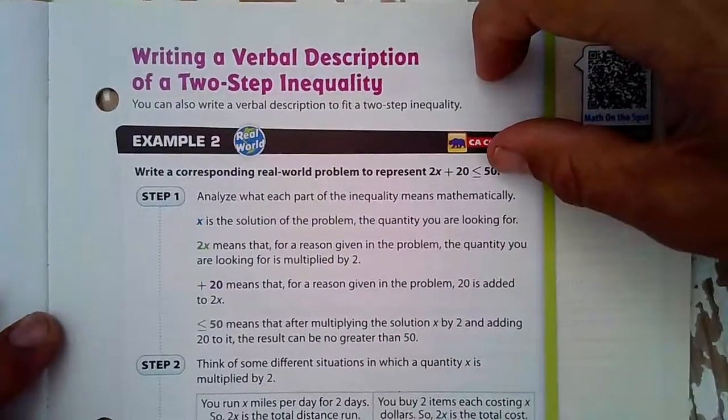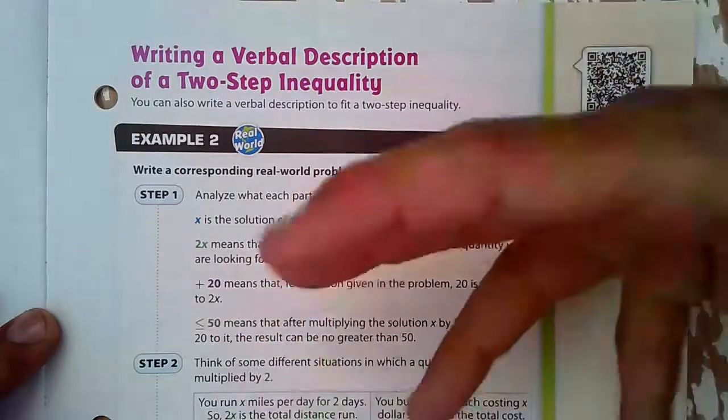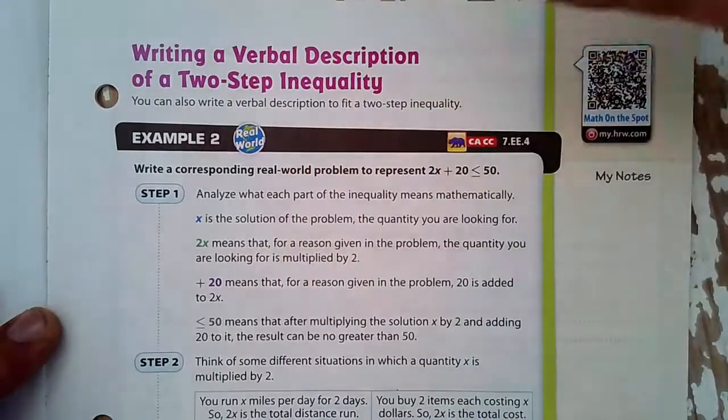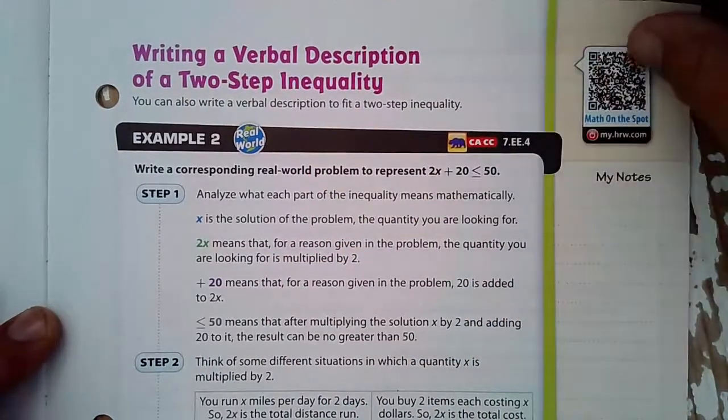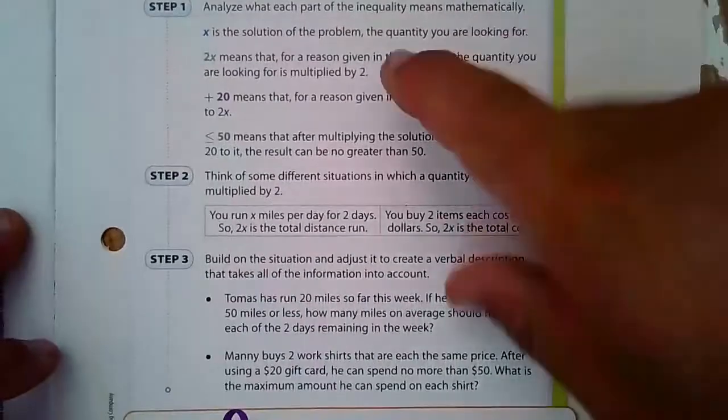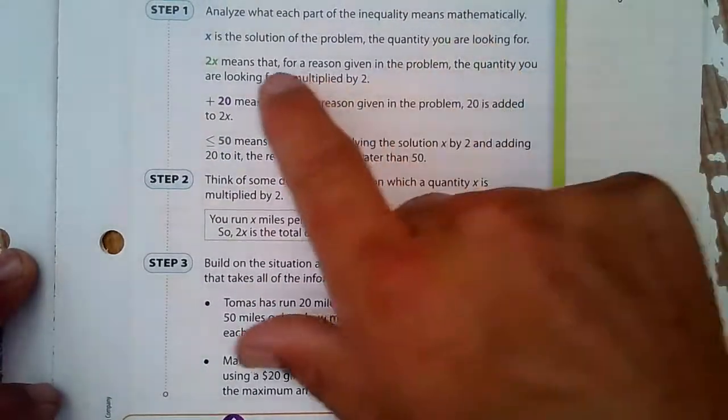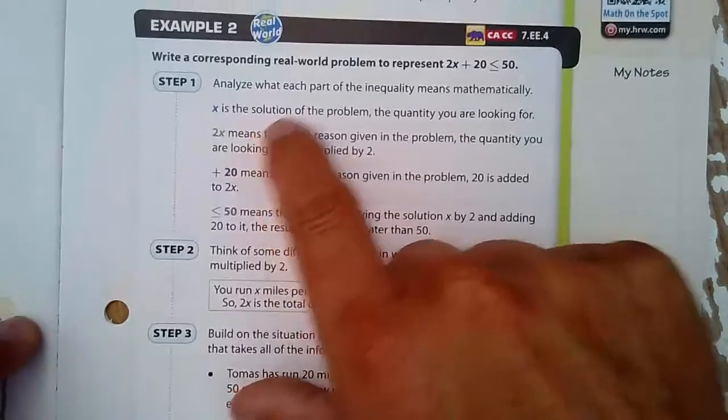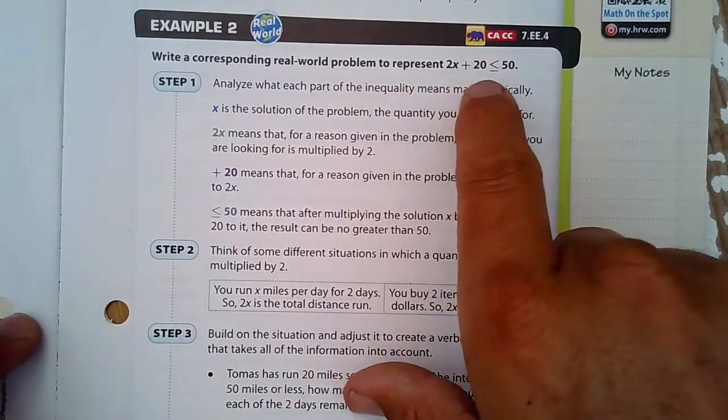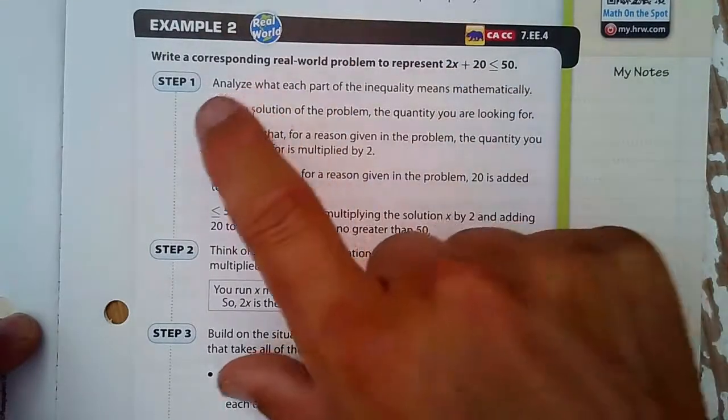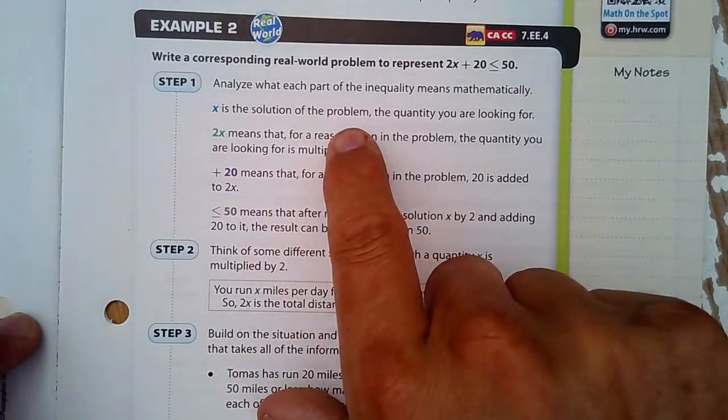Okay, now we're going to go the other way. We're going to start with the inequality in this example. And then we're going to try to write word problems that match the inequality that we see. So, analyze each part and what it means. Looking at 2x plus 20 is less than or equal to 50, x is the solution. That's what we're looking for.